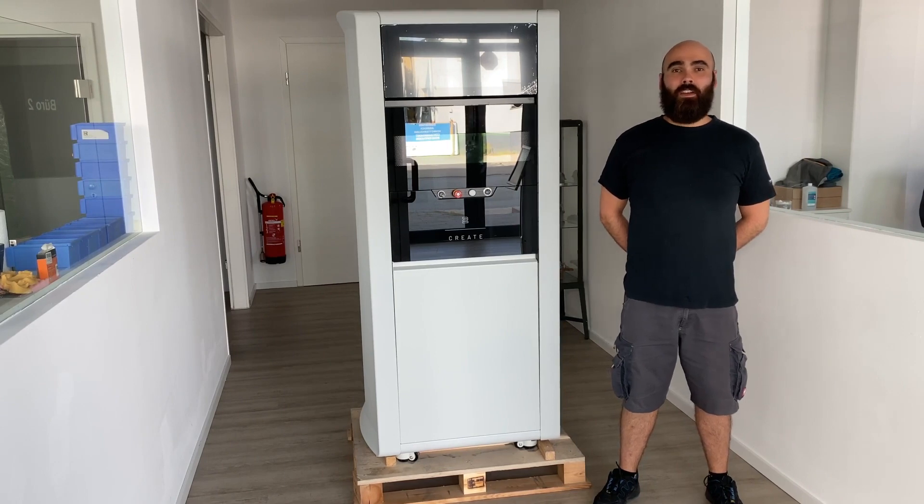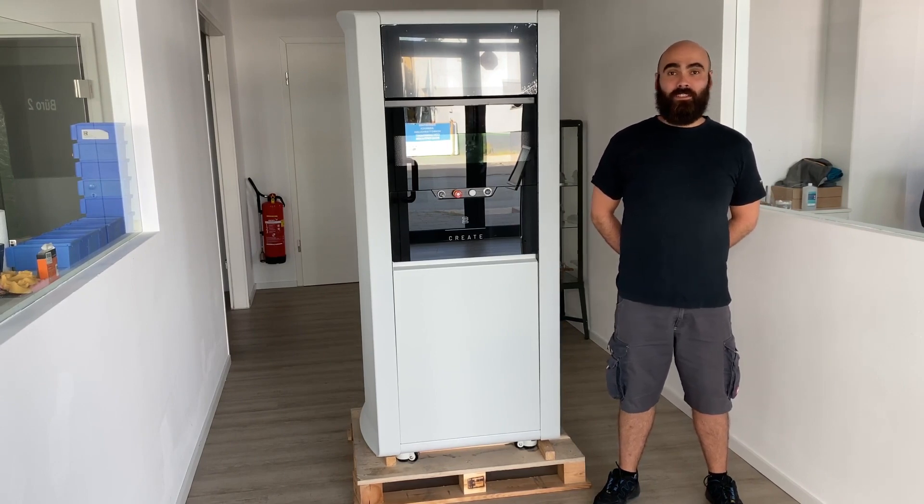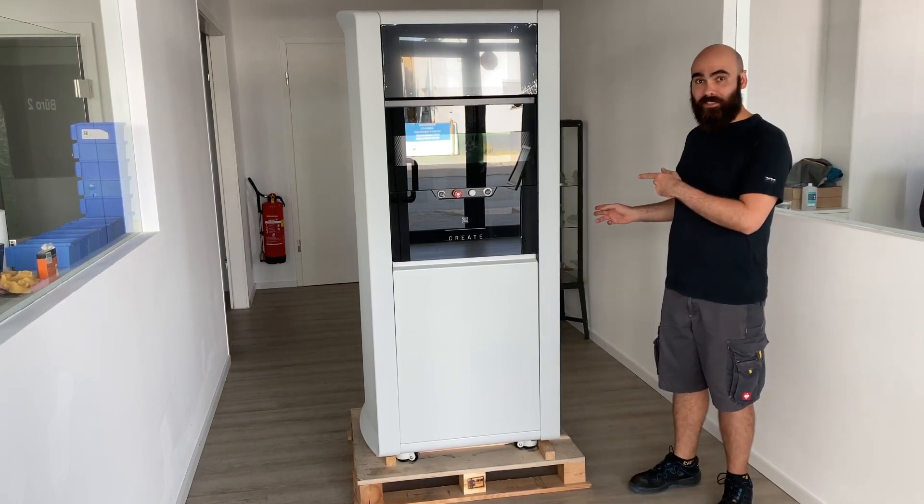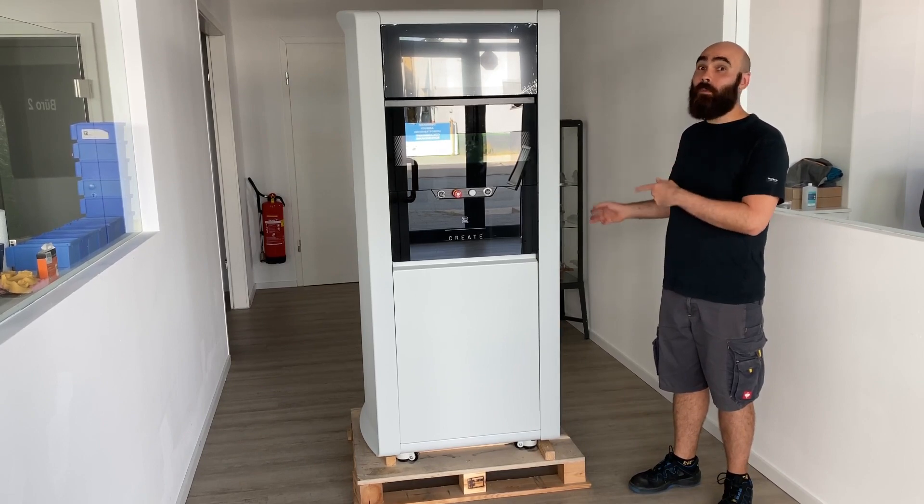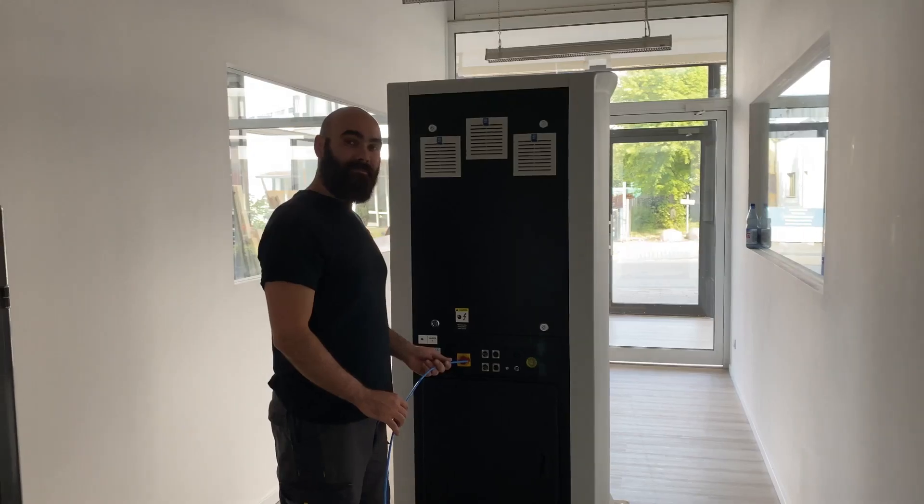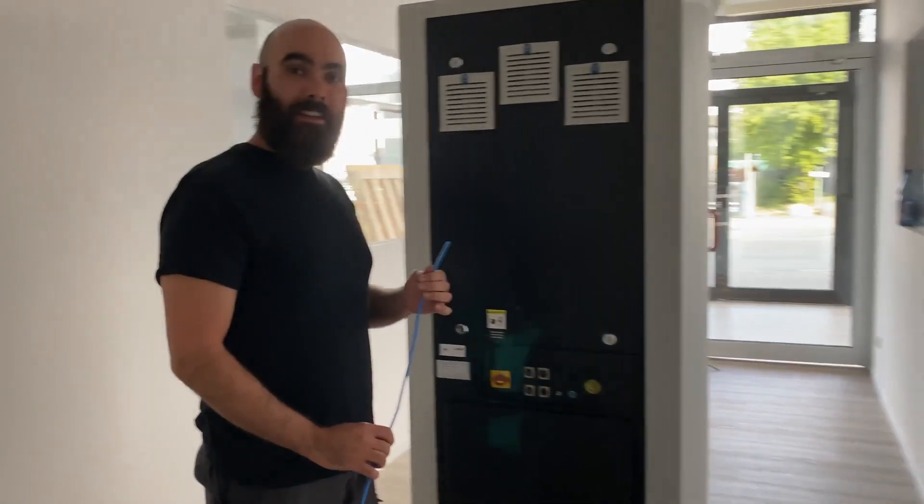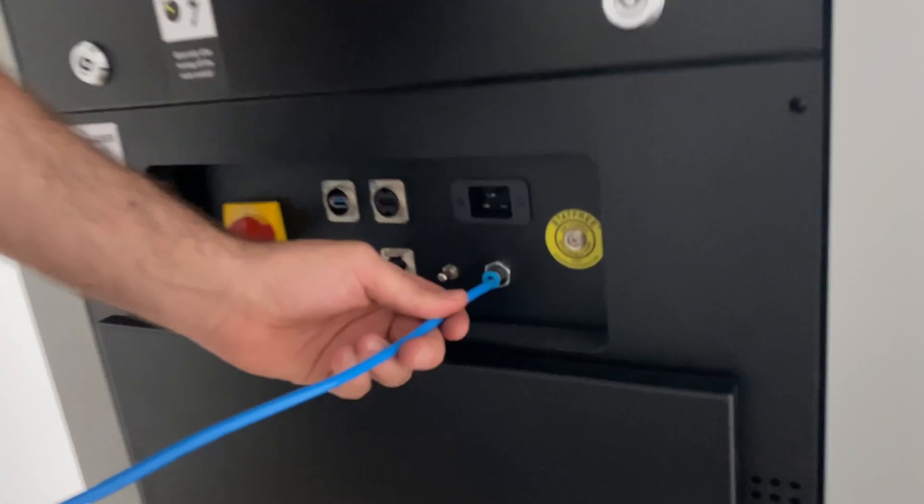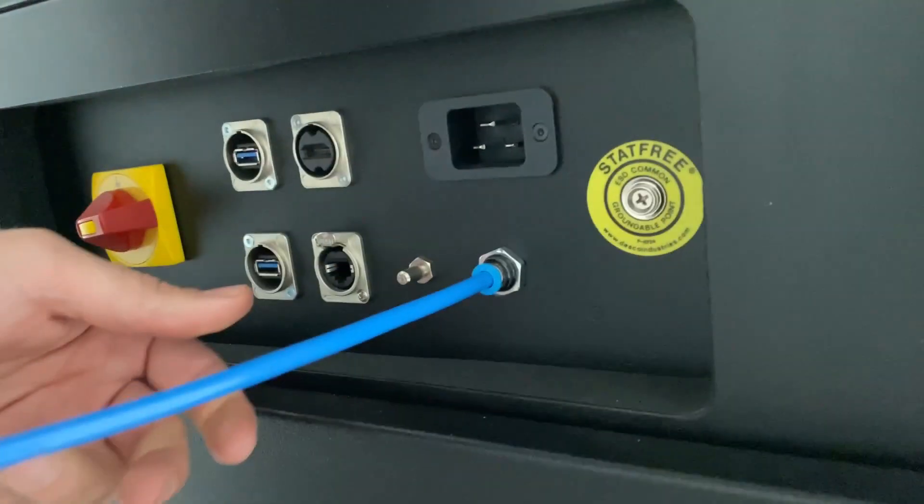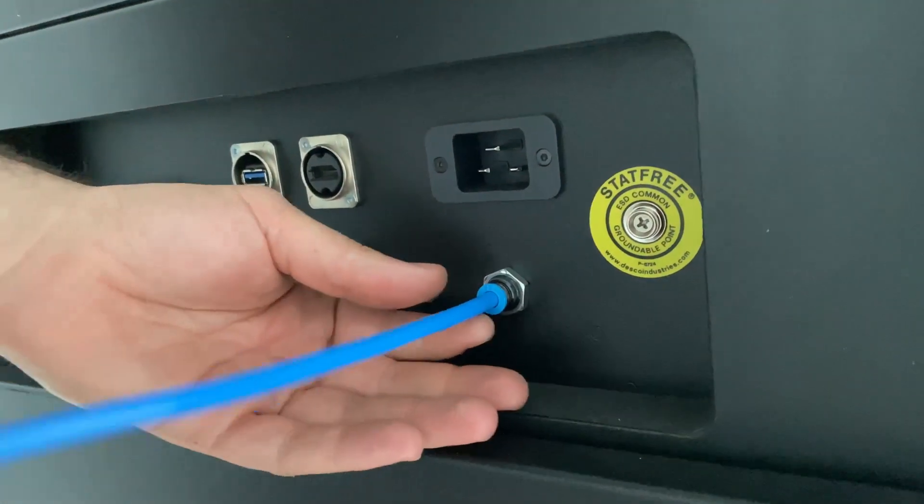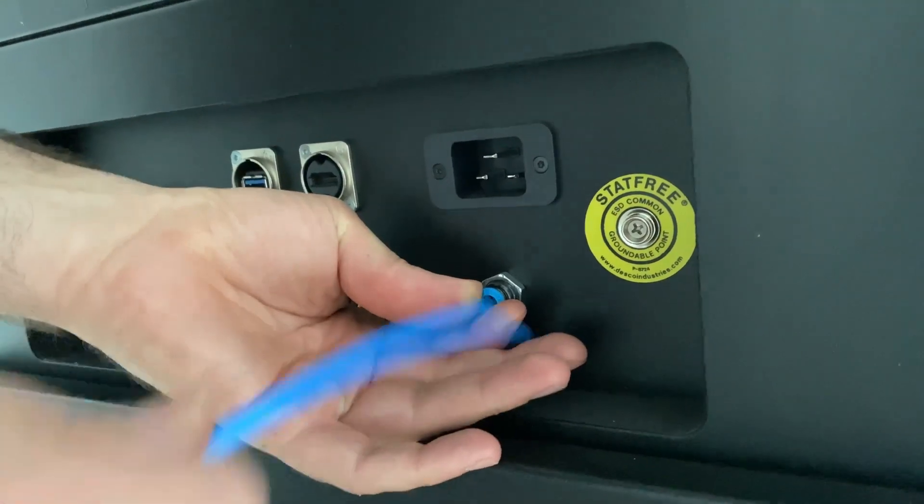The first step after unpacking our machine is to go to the back and connect the gas hose and power supply. First, connect our 6mm gas tubing to the machine. Just plug it in and you are good to go. If you want to unplug it, just push and pull.